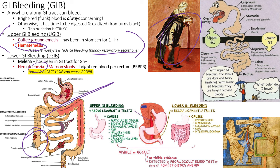With a brisk upper GI bleed, blood moves rapidly through the duodenum, jejunum, ileum, and colon and exits bright red — so bright red blood per rectum doesn't automatically mean a lower GI bleed. GI doctors will often perform an EGD first to rule out an upper source. A hiatal hernia causes GI bleeding through progressive ulceration — eroding through mucosal and muscle layers into underlying vessels.